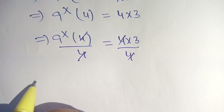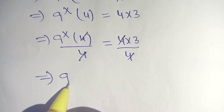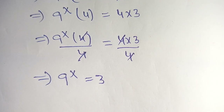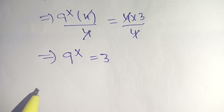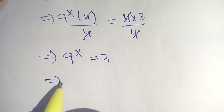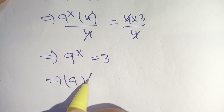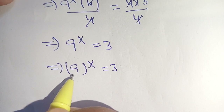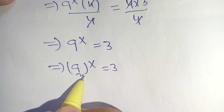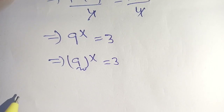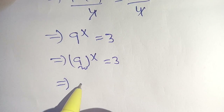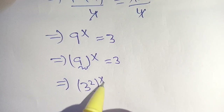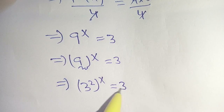Our remaining part is 9 to the power x is equal to 3. In the next step, we can write 9 in terms of 3, so this becomes 3 to the power 2, in brackets, raised to the power x, is equal to 3.